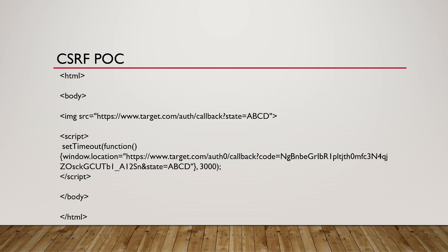So once the victim loads the page, the attacker's Google account gets linked to the victim's target.com account. If there is proper validation of the state parameter, the attack will fail. But if the application is vulnerable and the state has been fixated by the attacker, it is going to succeed, and the attacker will be able to log into the victim's account using the Sign In with Google functionality.